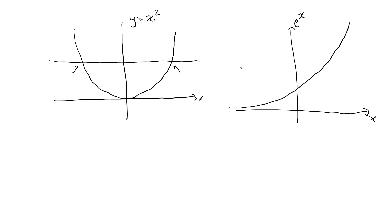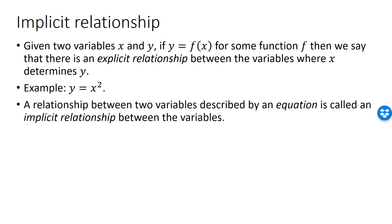An explicit relationship is not the only possible relationship between two variables. We can also define what's called an implicit relationship between the variables. An implicit relationship is described using an equation where we can have a mix of both variables on both sides. For example, x squared plus y squared equal to 1 is an example of an implicit relationship. In an explicit relationship, we always have only the variable y on the left hand side and a mathematical expression involving only x on the right hand side. In an implicit relationship, we can have a mathematical expression involving both variables on both sides.